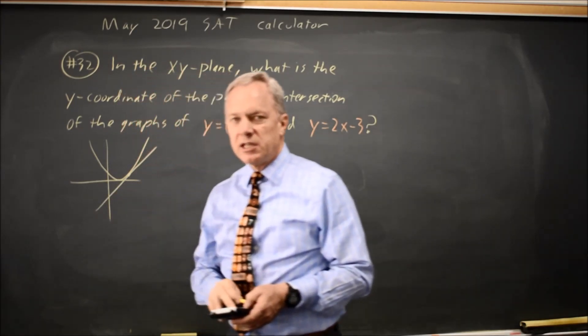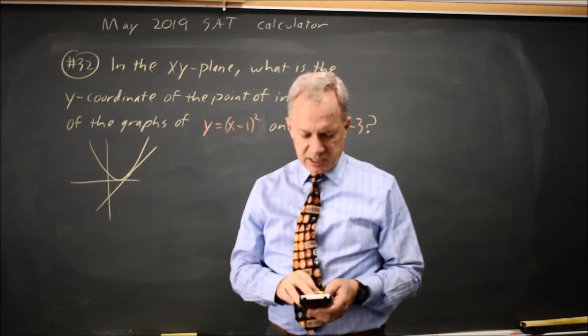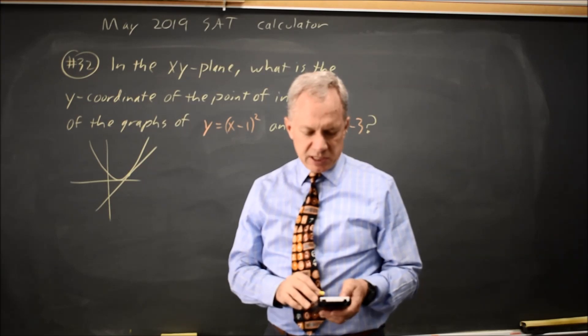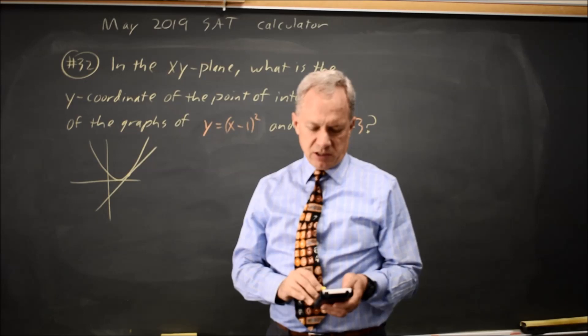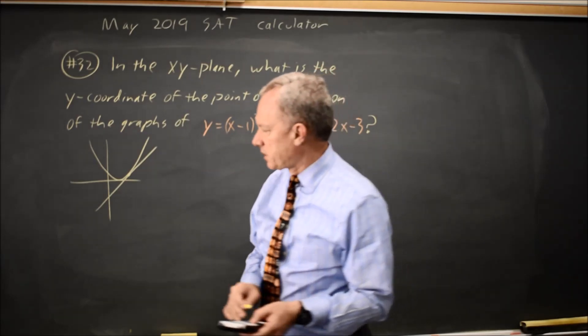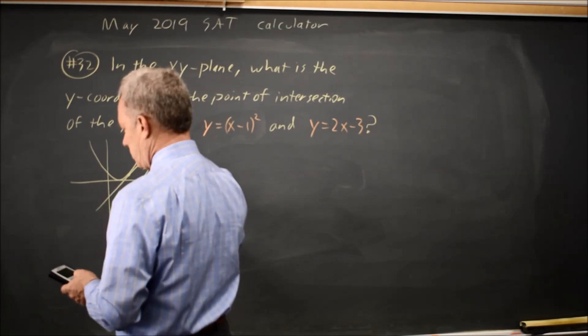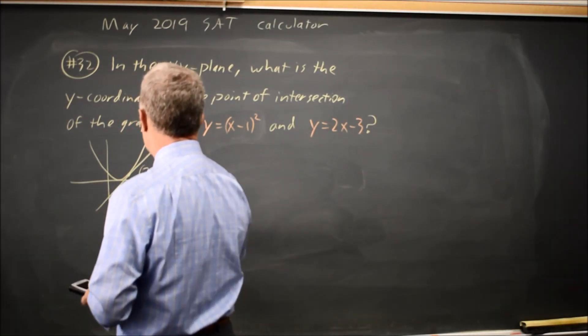And then if I use the intersect feature, one of the features of the graph and calculator, second trace for calculate on my TI-84 or 83, scroll down to choice 5 for intersect, hit enter, and then hit enter three times. It says the point of intersection is at x equals 2, y equals 1, and they're asking for the y-coordinate.